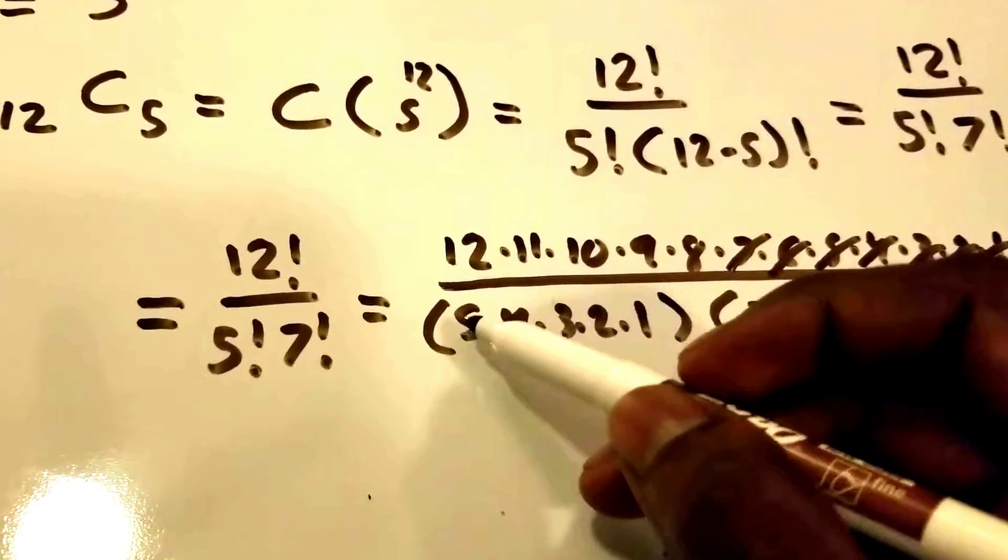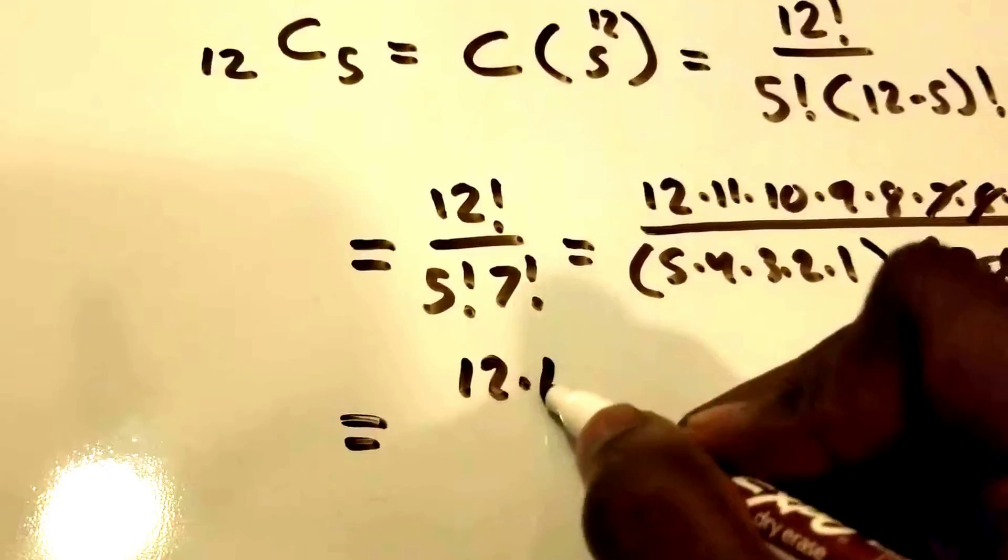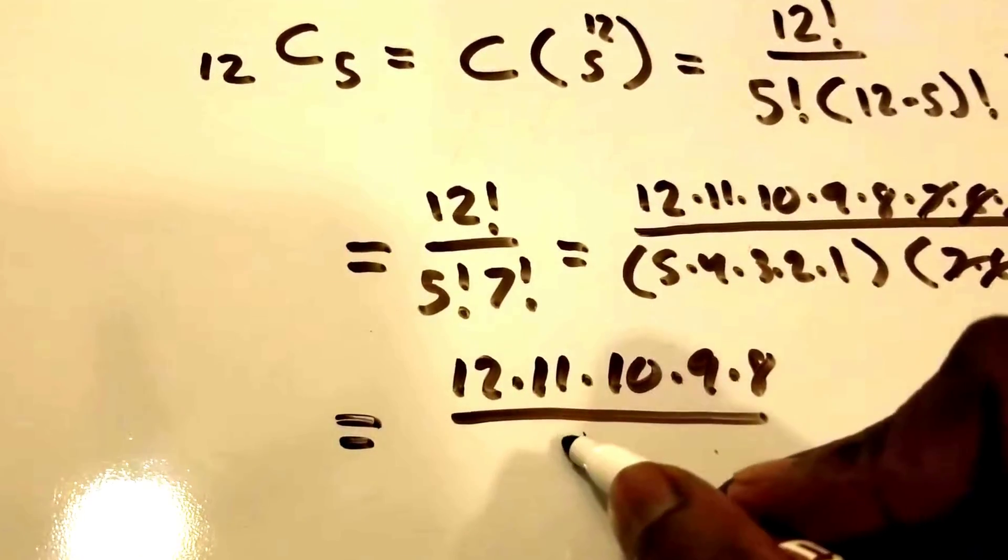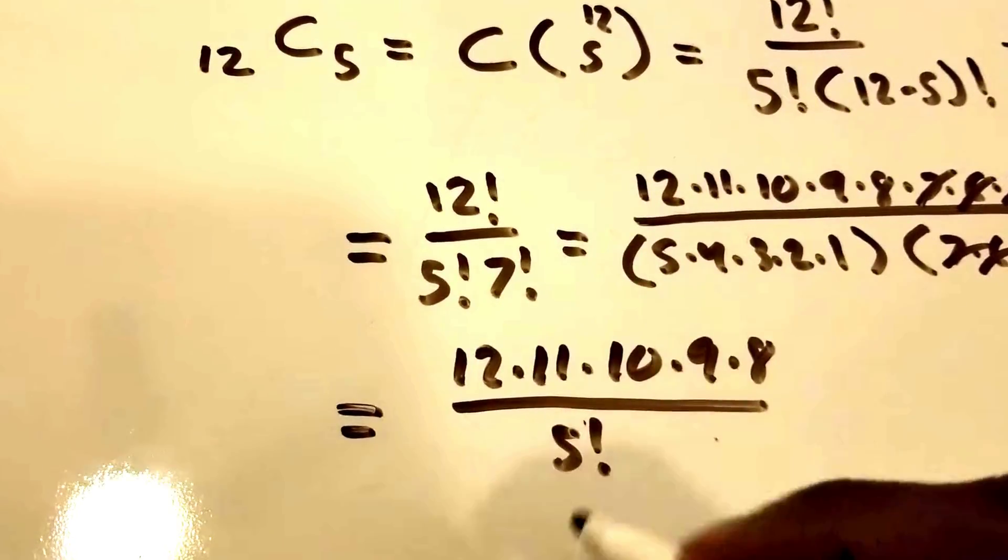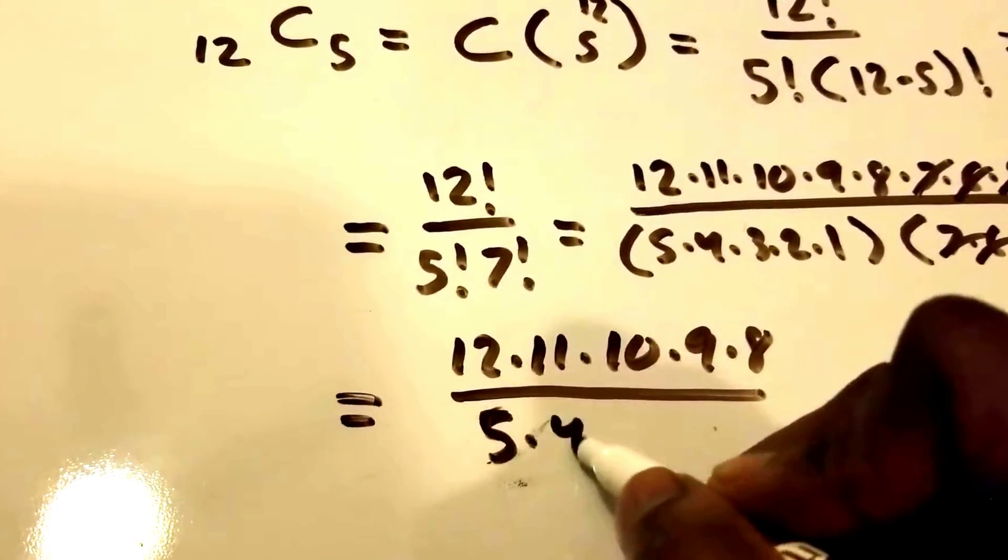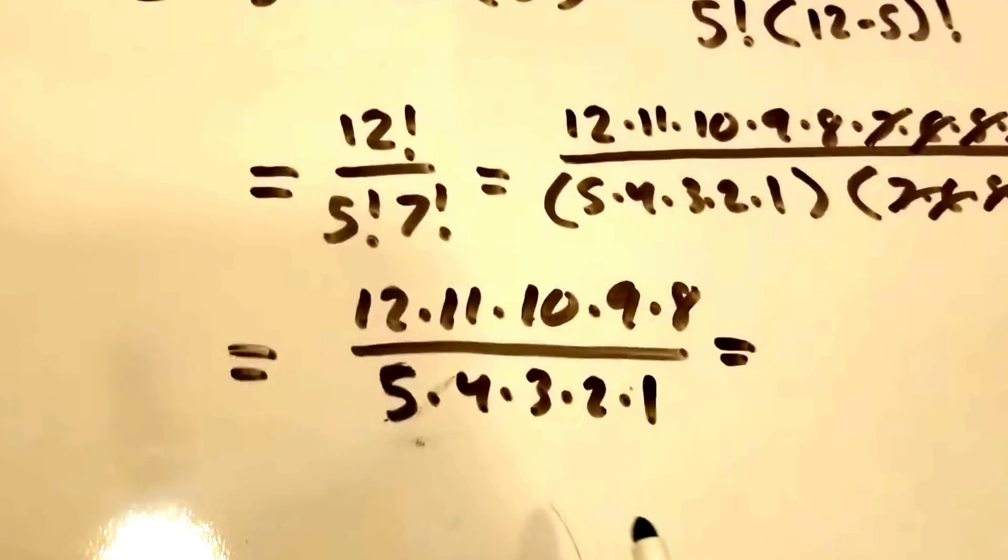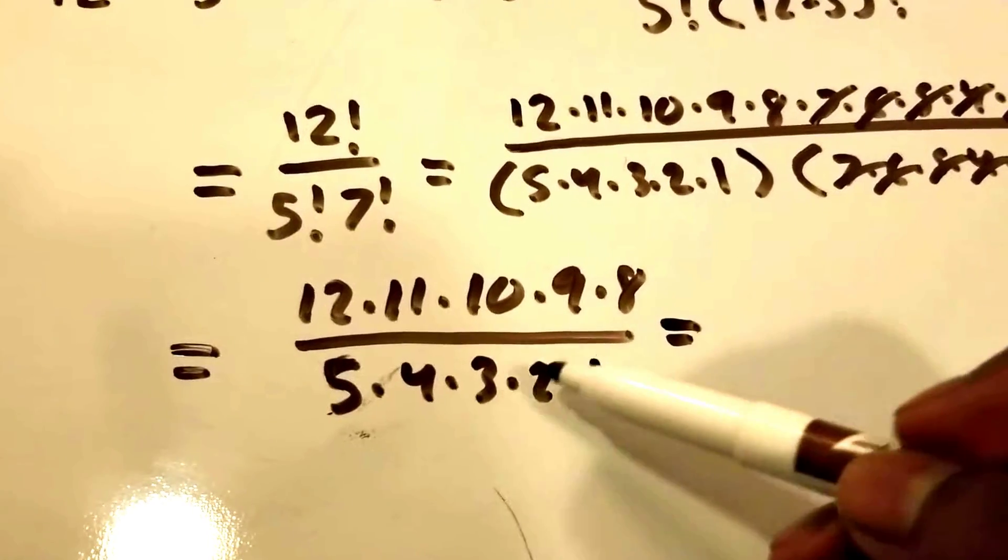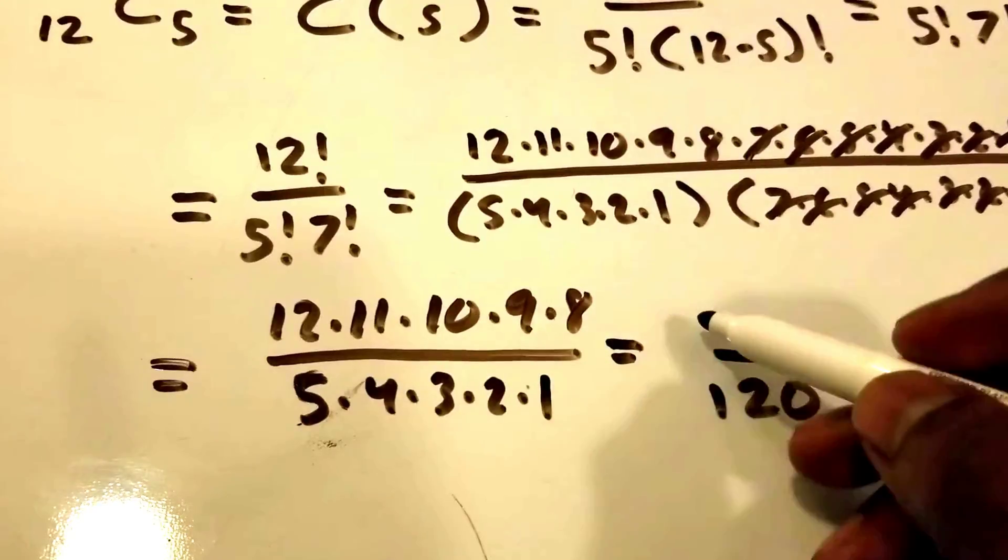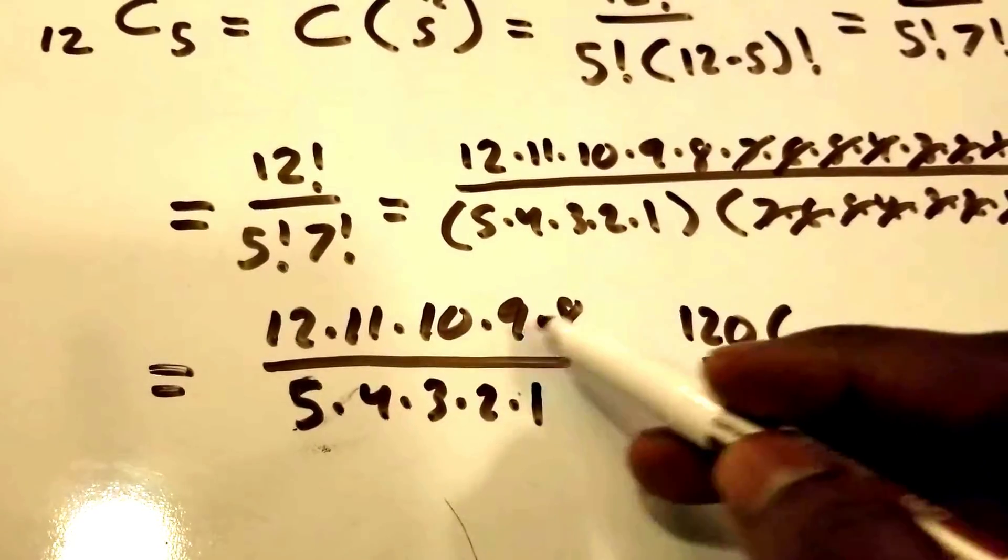I'm going to write this equation again. What we have now is 12 times 11 times 10 times 9 times 8, all divided by 5 factorial, which is 5 times 4 times 3 times 2 times 1. This equals 120 on the bottom, and on the top we have 12 times 10 is 120, times 11, times 9, times 8.